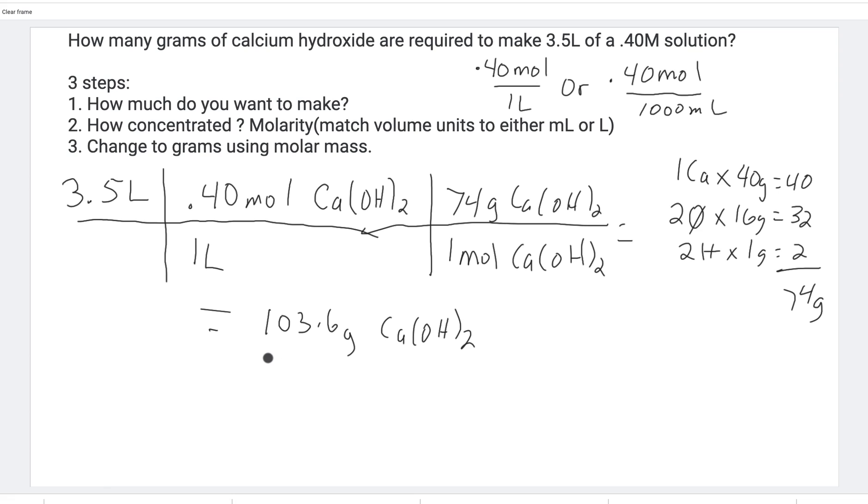And if you round that off to significant digits, you probably have to write it in scientific notation, so 1.0 × 10² grams calcium hydroxide.